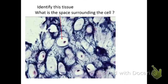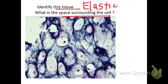Take a second and try to figure this one out — identify the tissue and the space around the tissue. This one is elastic cartilage. You can see the elastic fibers right there; this one's in your ears. And that space is the lacuna.